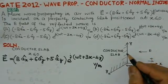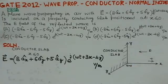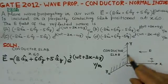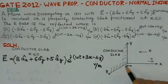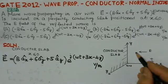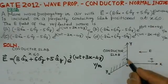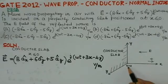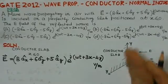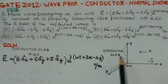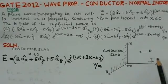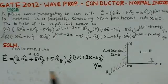First, we set up the geometry using a right-handed coordinate system with X, Y, and Z axes. The conducting slab is placed at X equal to zero and extends into X less than zero. That means the left-hand side is the conductor slab and the right-hand side is free space.